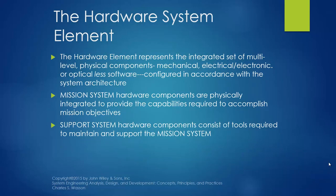The hardware system element could be considered as part of the equipment element. It represents the integrated set of multi-level physical components — mechanical, electrical, electronics, or optical — that is less software-configured, and configured in accordance with the system architecture. The mission system hardware components are physically integrated to provide the capabilities required to accomplish mission objectives. The support system hardware components consist of tools required to maintain and support the mission system.